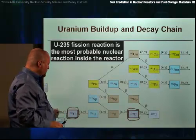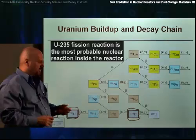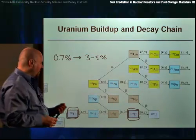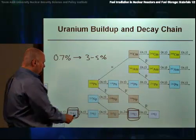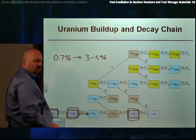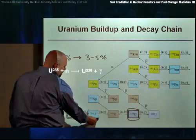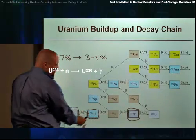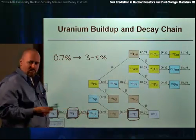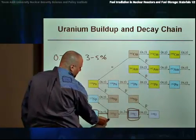Most of the reactions that would occur in the U-235 isotope would be fission reactions. However, on occasion, when irradiated in a reactor, some of the neutrons will get absorbed in what we call a radiative capture reaction, which is a reaction that would lead to the production of the isotope U-236.